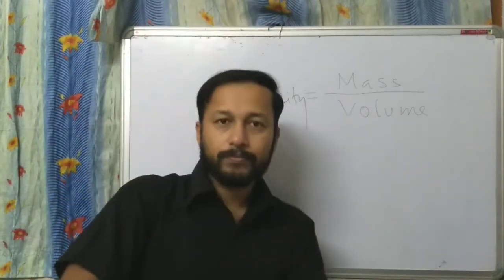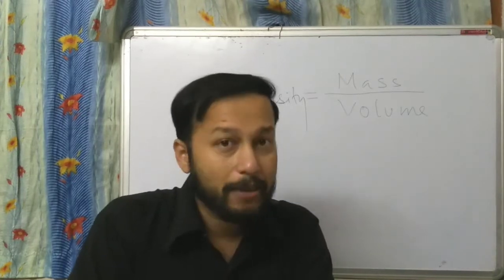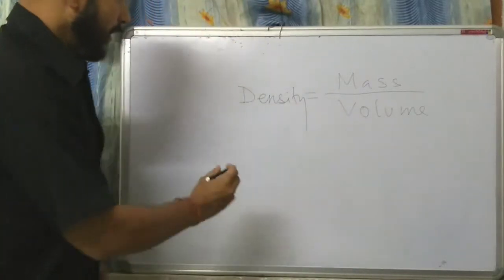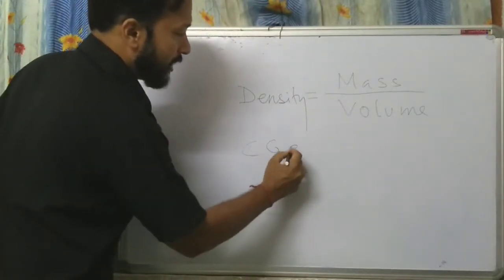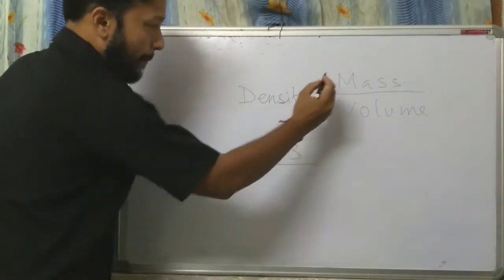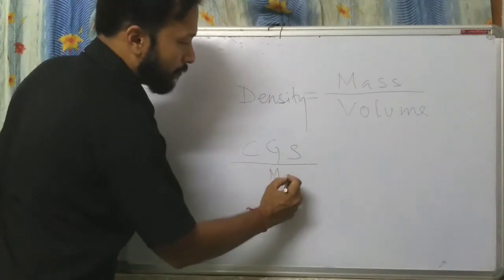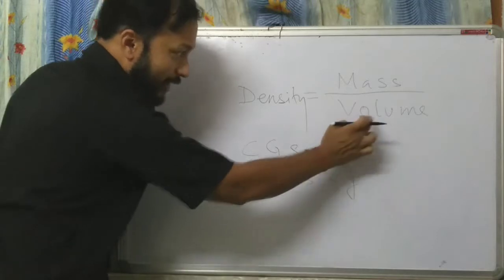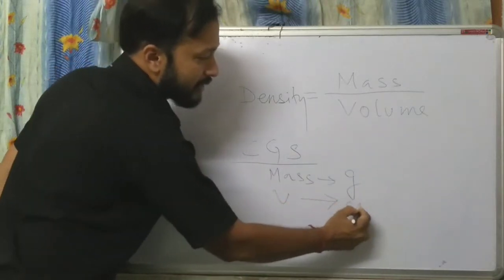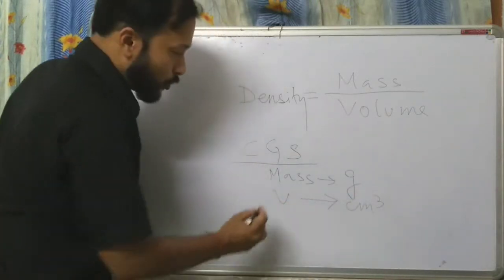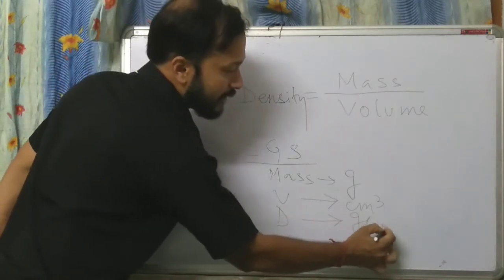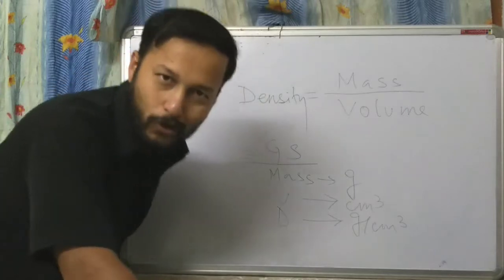If you divide mass by volume, we get the density of the object. So density equals mass by volume. That is why density means mass per unit volume. In the CGS system, the unit of mass is gram and the unit of volume is centimeter cube, so the unit of density is gram per centimeter cube.